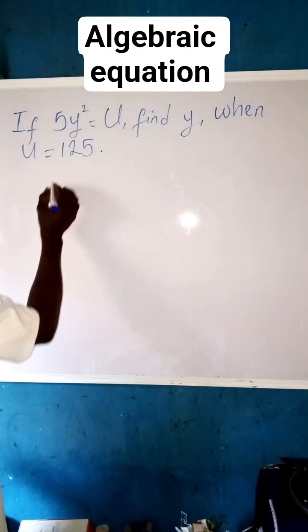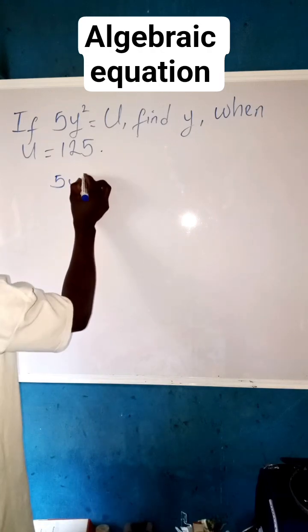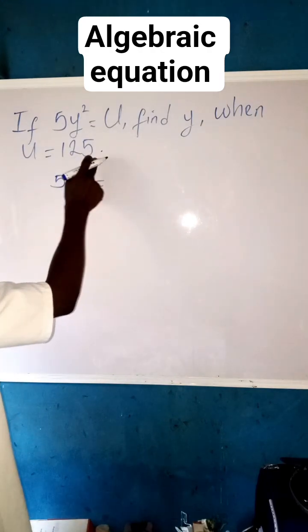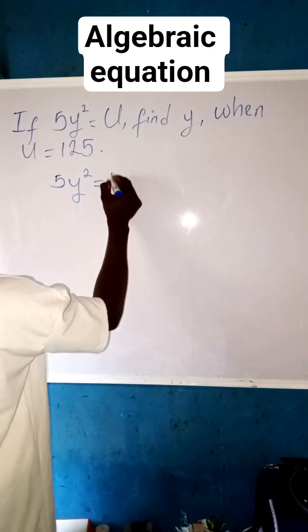It's very simple, let us go together. We see 5y squared equals to, instead of writing u, we put 125 since they are the same, equals to 125.